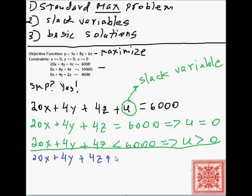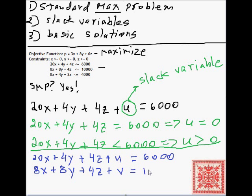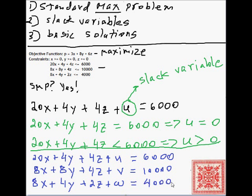We can rewrite all constraints in terms of slack variables. The first constraint becomes: 20x + 4y + 4z + u = 6000. The second constraint becomes: 8x + 8y + 4z + v = 10000. The third constraint is similarly rewritten by adding another slack variable w = 4000. In general, any set of constraints can be rewritten by adding exactly one unique slack variable per constraint.